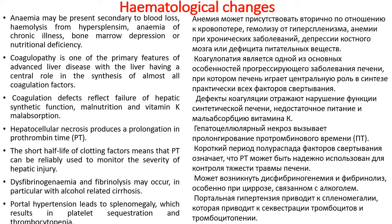Hematological changes. Anemia may be present secondary to blood loss, hemolysis from hypersplenism, anemia of chronic illness, bone marrow depression, or nutritional deficiency. Coagulopathy is one of the primary features of advanced liver disease, with the liver having a central role in the synthesis of almost all coagulation factors. Coagulation defects reflect failure of hepatic synthetic function, malnutrition, and vitamin K malabsorption.